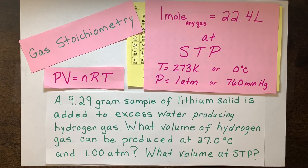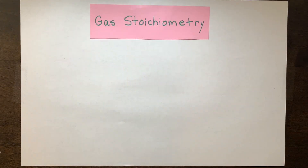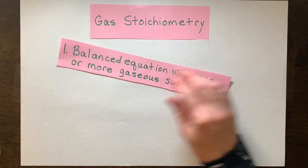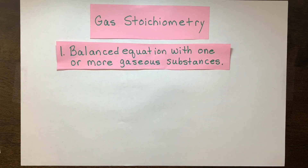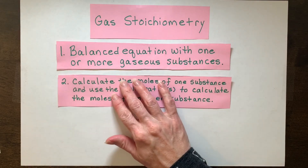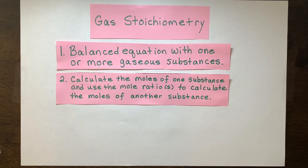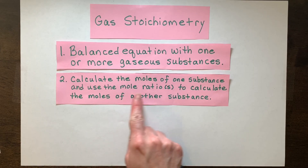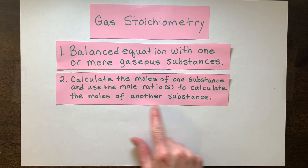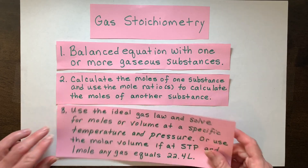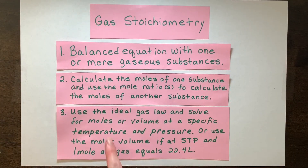There are typically three steps involved with gas stoichiometry. Step one has to always be first, which is to write the balanced equation, and it must contain one or more gaseous substances as reactants or products. Steps two and three could be in either order. You're going to calculate the moles of a substance, and then you're going to use the mole ratio off of the balanced equation to calculate the moles of another substance. The third step is you're going to use the ideal gas law and solve for the moles or the volume at a specific temperature and pressure.